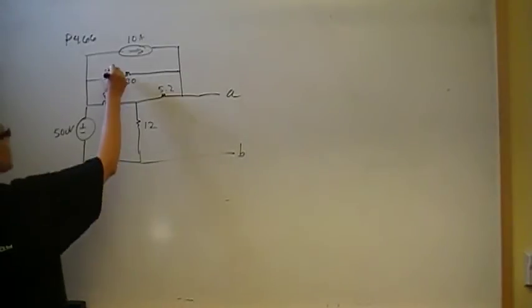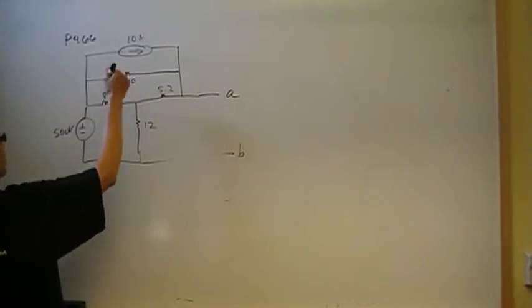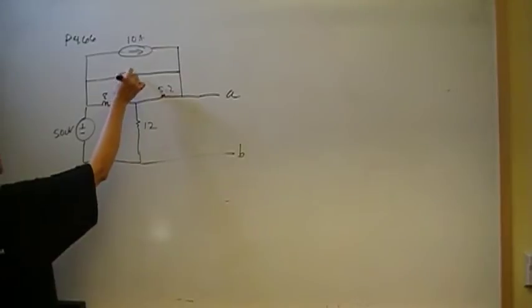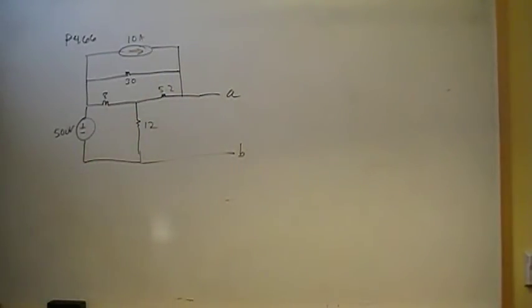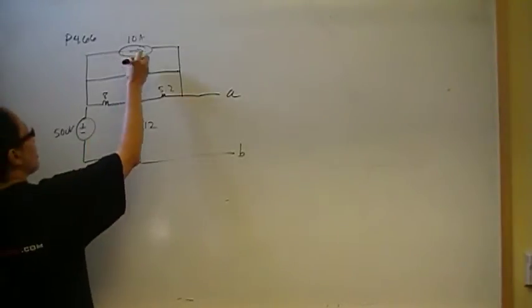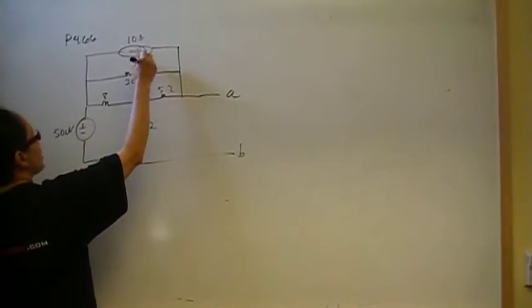So we're going to use the mesh method. If we were really clever, we would see that we could do a source transformation here and just consolidate that into one mesh. But I like to do things the way that maybe you wouldn't really see it if you were stressed out in an exam. So let's say you didn't really see to do the source transformation there. We can still solve this by the mesh method. So let's start.